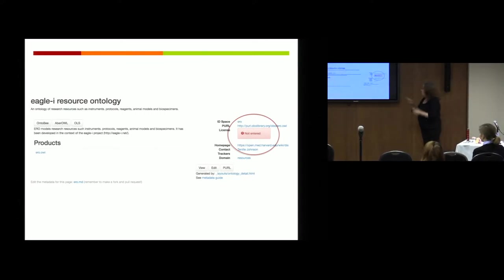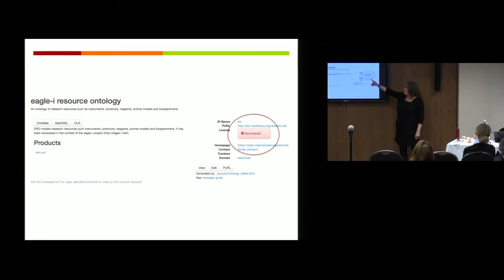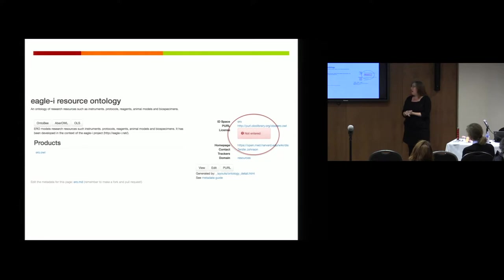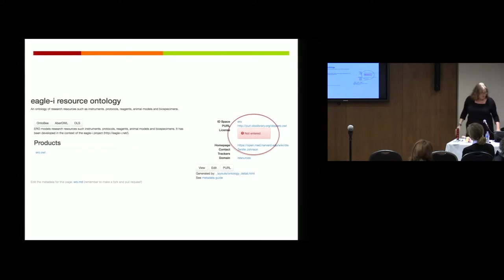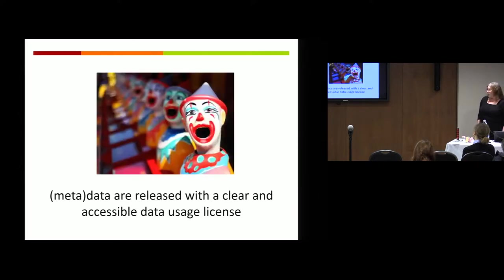This is our record in OBO Foundry — this is the metadata for our ontology. And it says 'license,' and it's a large red thing that says 'not entered.' That's because we failed this one. We think we have a license — we think they got a license when they first created Eagle Eye — but I've only been with Eagle Eye two years and we can't figure out if it was assigned and where that information is. So we're redoing it and discussing which one we're going to use now. Which letter have we failed with having no license for our tool? R — yes, that would be the R. We failed.